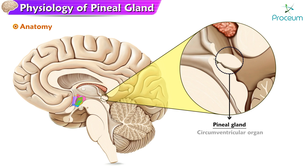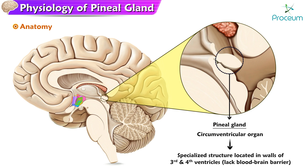The pineal gland is a circumventricular organ. Circumventricular organs are specialized structures located in the walls of the third and fourth ventricles of the brain, which lack a blood-brain barrier.